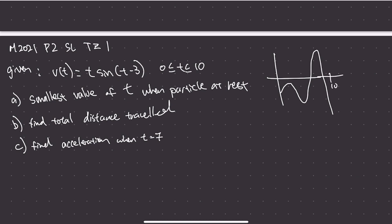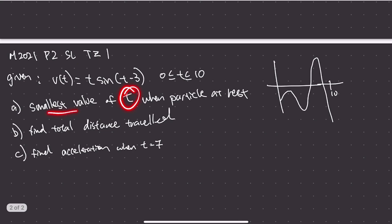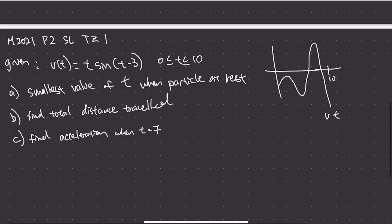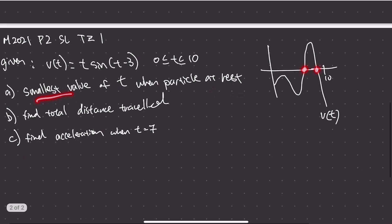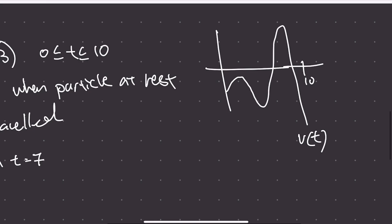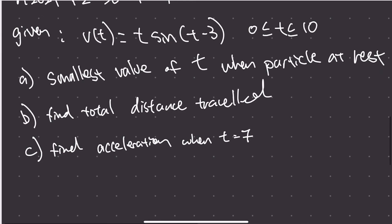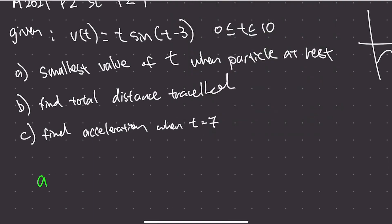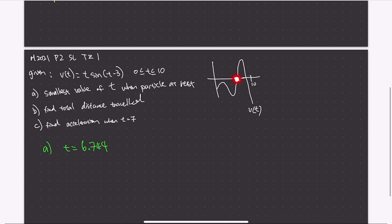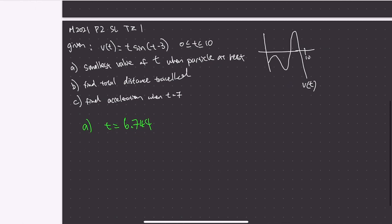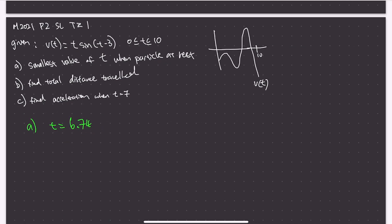Part A asks for the smallest value of t when the particle is at rest. On the velocity graph, the particle is at rest when the y-coordinate equals zero. There are multiple zeros, but we want the smallest one. Using your calculator to find the first zero gives t = 6.744, which rounds to 6.74 to three significant figures.